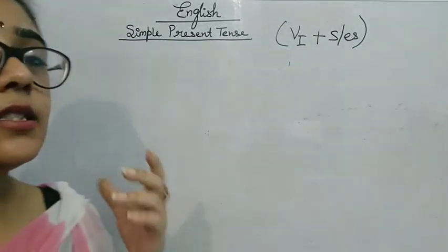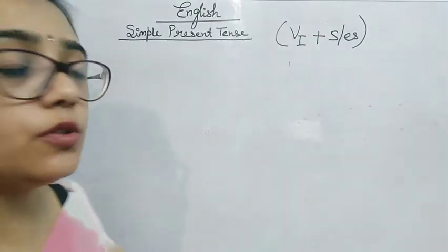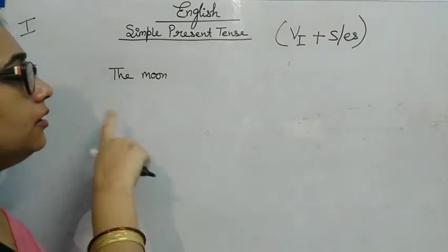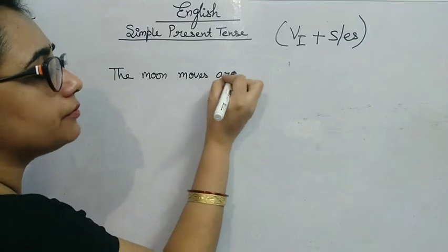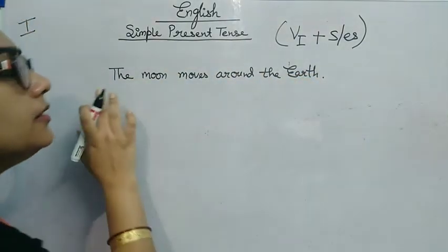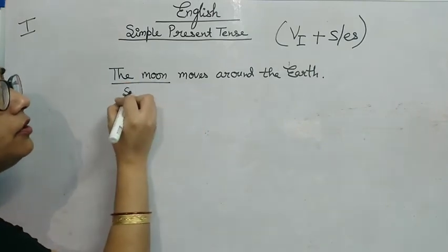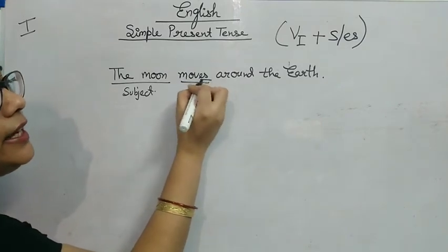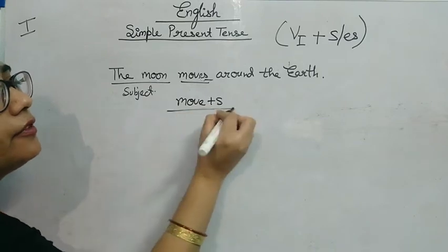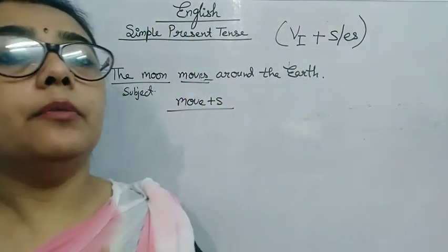We also use simple present tense when we want to show some universal fact. For example: the moon moves around the earth. This is a universal fact — it happens and it will always happen. The subject is 'the moon' and we have added S to the base verb 'move'. So for universal truth also, we use simple present tense.